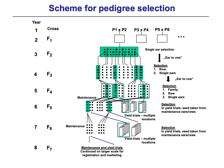This is a schematic illustration for pedigree selection in wheat. See here on the left side the scale for the year where we are. Here we have the generations across the F1, F2, and the following generations, and here we have the schematic illustration.